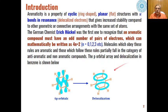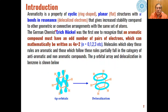As you know, aromaticity is the property of cyclic planar structures with pi bonds in resonance, which gives increased stability in comparison to other geometric or connective arrangements with the same set of atoms. It was first recognized by Hückel that an aromatic compound must have an odd number of pairs of electrons.